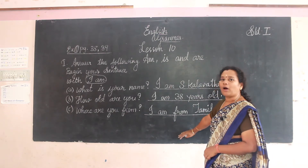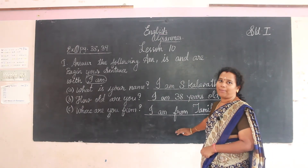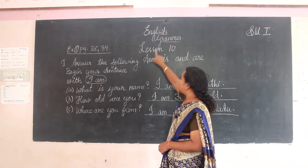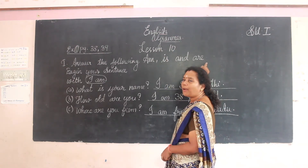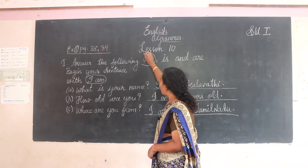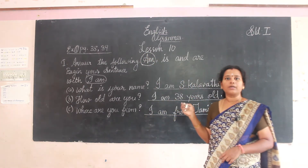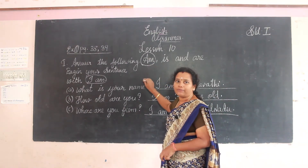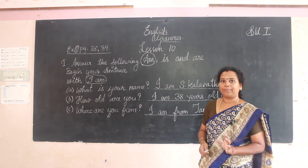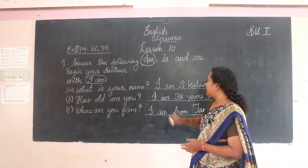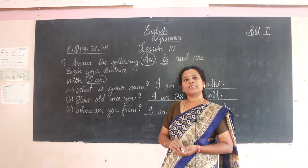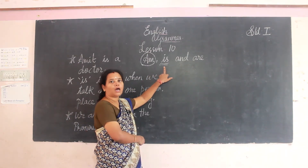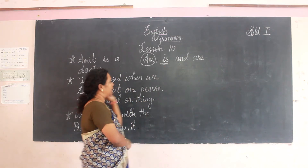So you will now know how to write 'am' and where to use 'am'. We were seeing 'am', 'is', and 'are', but I have taught you about 'am'. Now I am going to teach the next word, that is 'is'. We are going to see 'is' — where to write 'is'.